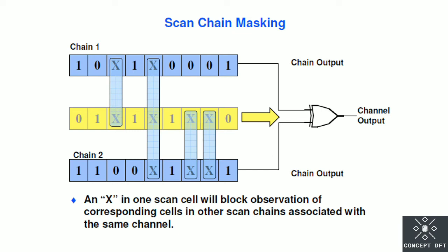What is scan chain masking and why we have to perform that? In figure we can see 2 scan chains are there. In every scan chain X values are present. X value means unknown value. X value in one scan chain will disturb the same slot of other scan chain as well.